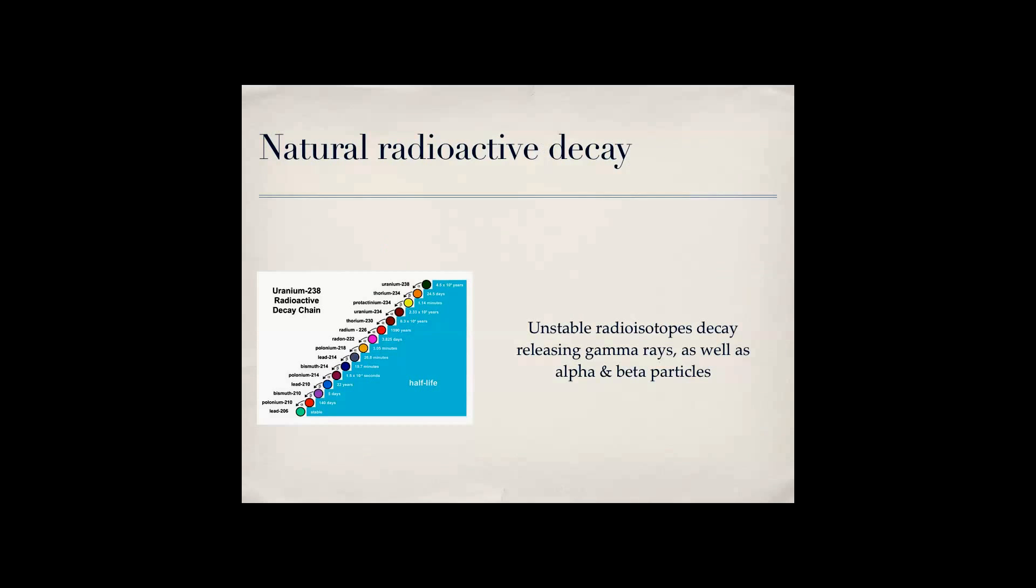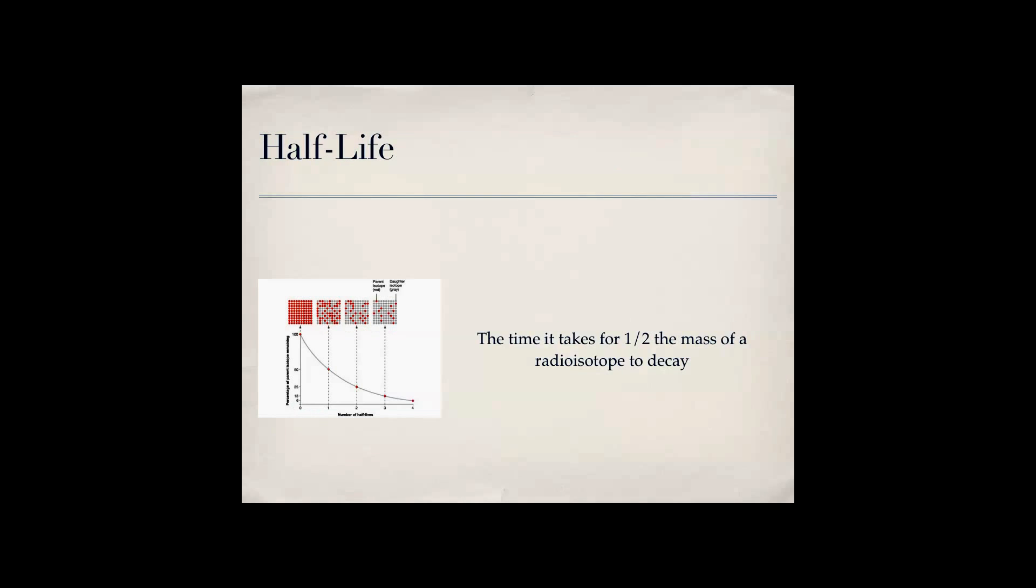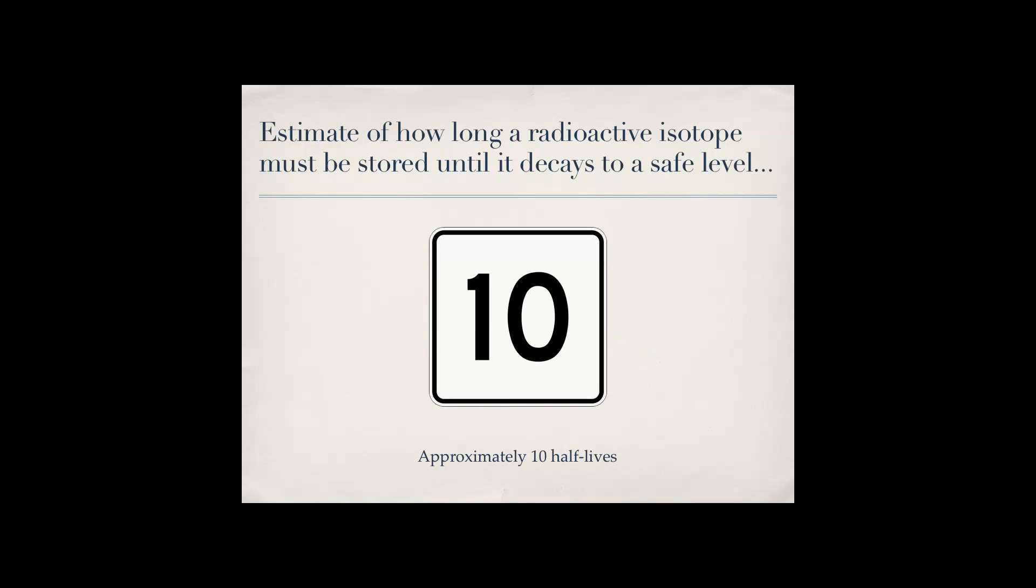Natural radioactive decay is unstable radioisotopes, and when they decay they release gamma rays and alpha and beta particles. A half-life is the time it takes for one half the mass of a radioisotope to decay. Estimate of how long a radioactive isotope must be stored until it decays to a safe level is approximately 10 half-lives, which is quite a while depending on which substance we're speaking of.